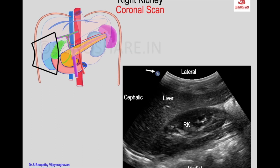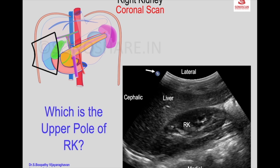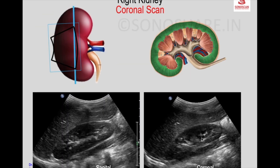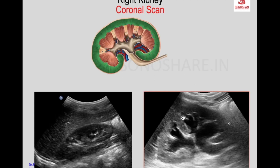Because the probe mark is here, this is the collecting system, and the vessels reach the retroperitoneum through the hilum. When you see the collecting system, these are the calyces communicating with the renal pelvis, continuous as the ureter.